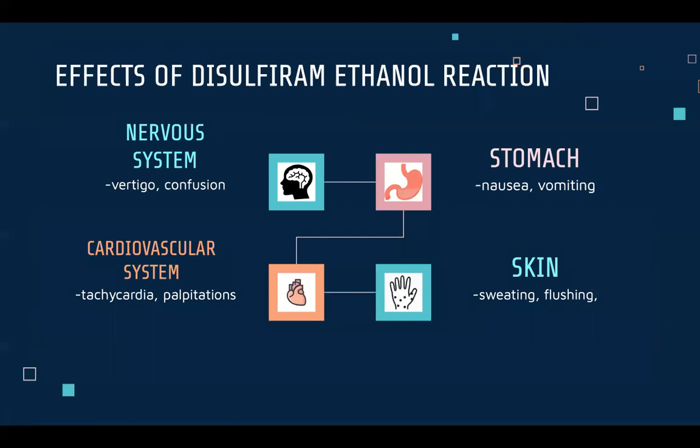The side effects of the disulfiram-ethanol reaction include things that interfere with the nervous system and brain, such as vertigo, confusion, headaches, and really bad migraines. It also causes tachycardia, increased blood pressure, and chest palpitations, which usually make people feel more panicked and unwell and might even result in a panic attack. With the stomach, it causes nausea, vomiting, and feelings of uneasiness. This also leads to skin feeling red and flushed and a lot of sweating — in summary, a really bad, heightened hangover.